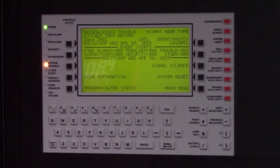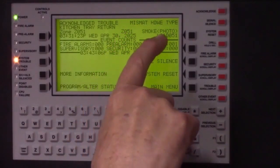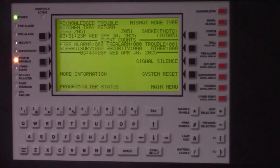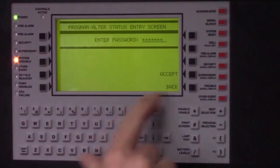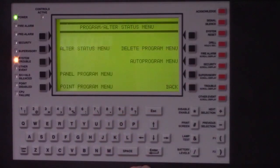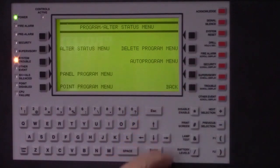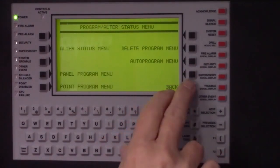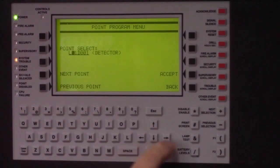To clear the hardware mismatch, we need to change this point from a smoke to a thermal detector. Press program alter status and enter your password. We can clear the trouble with auto program, but we won't do it that way and I'll show you why. We'll do this in the point program.